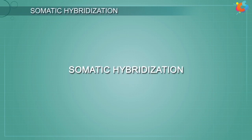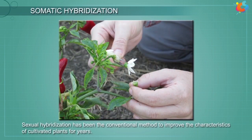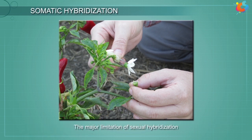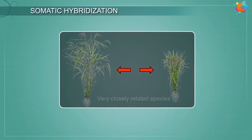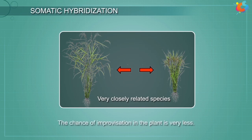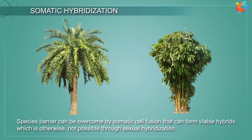Somatic hybridization. Sexual hybridization has been the conventional method to improve the characteristics of cultivated plants for years. The major limitation of sexual hybridization is that it can be performed within a plant species or very closely related species. The chance of improvisation in the plants is very less. Therefore, species barrier can be overcome by somatic cell fusion that can form viable hybrids, which is otherwise not possible through sexual hybridization.